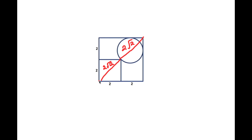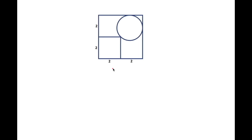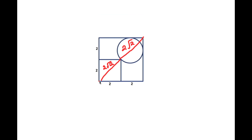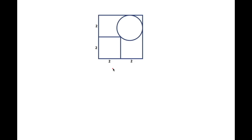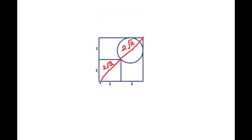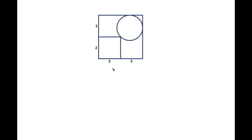I have another triangle here, and I can say that R squared plus R squared is equal to C squared. This means that 2R squared is equal to C squared. Now if I take the square root on both sides, I get the square root of 2 times R is equal to C. So √2·R is equal to C.